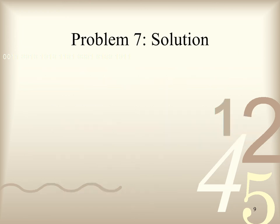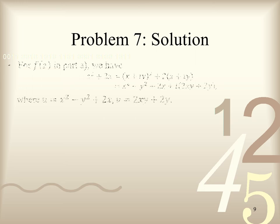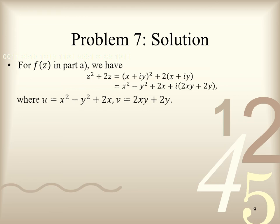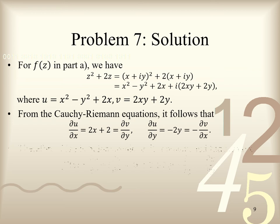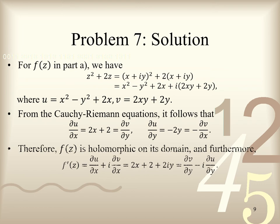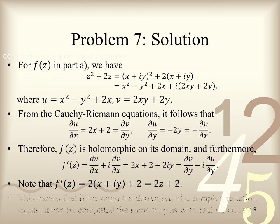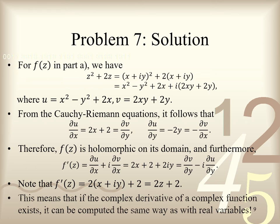Let's begin solving problem 7. For f of z in part A, we can express it in terms of x and y as given here, where u equals x squared minus y squared plus 2x, and v equals 2xy plus 2y. From the Cauchy-Riemann equations, it follows that the partial derivative of u with respect to x and the partial derivative of v with respect to y both equal 2x plus 2, while the partial derivative of u with respect to y and the negative partial derivative of v with respect to x both equal negative 2y. Therefore, since both sets of equations are satisfied, f of z is holomorphic on its domain. Furthermore, f prime of z is given as follows. Note that f prime of z is in fact 2z plus 2. This tells us that if the complex derivative of a complex function exists, then it can be computed the same way as with real variables in calculus.